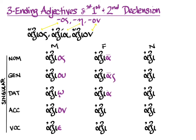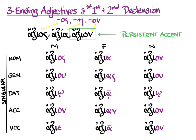Then we have the alpha versions of the feminine first declension endings: a, as, a, on, and a. And then the neuter: on, oo, a, o, on, and on. Persistent accent — this time trying to be an acute on the third to last syllable. And of course, as you can see, it gets pulled to the second to last when the last syllable in the different cases becomes long.